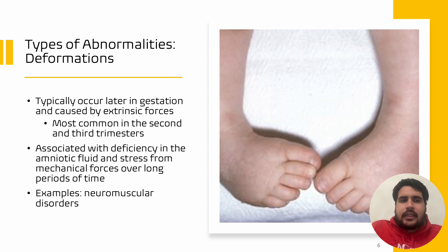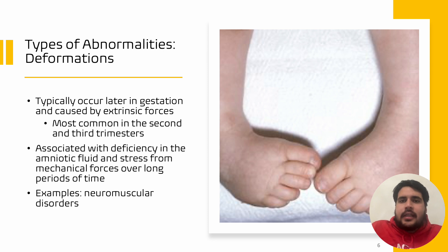The second type of abnormality are deformations. Deformations typically occur later in the gestation and are caused by extrinsic factors rather than intrinsic causes. They are most common in the second and third trimesters of pregnancy. Deformations are associated with a deficiency in the amniotic fluid, meaning there isn't enough amniotic fluid protecting the embryo. They can also be caused by stress from mechanical forces over long periods of time. An example of deformations would be neuromuscular disorders.